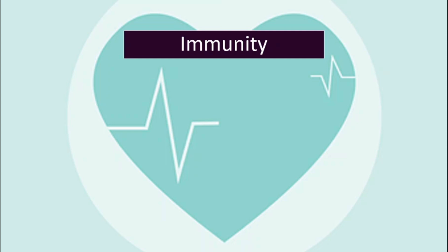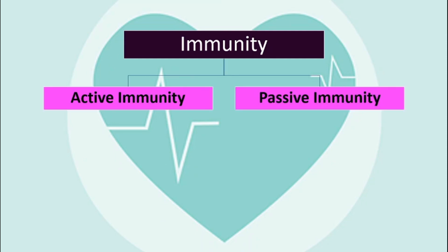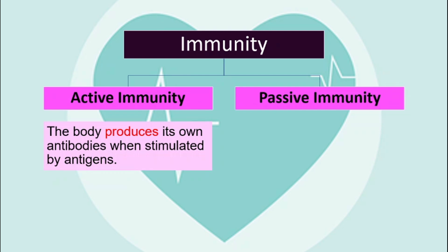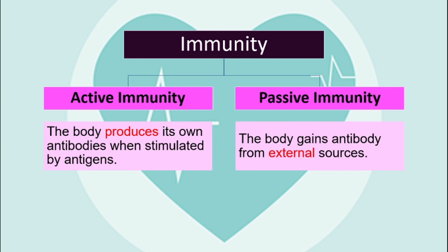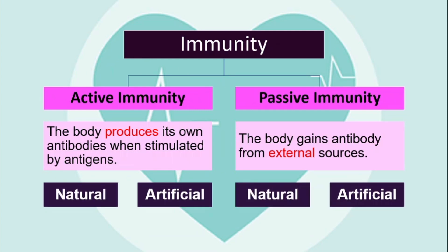Next, we are going to look at immunity. What is immunity? Immunity is the ability of our body to fight pathogens so that we don't fall sick. There are two types of immunity: active and passive. Active means our body produces our own antibodies. For passive immunity, the antibody comes from somewhere else — we do not produce it ourselves. And for both active and passive immunity, we have natural and artificial. Natural means it occurs naturally; artificial means man-made. For both types, the artificial form is actually in the form of an injection.